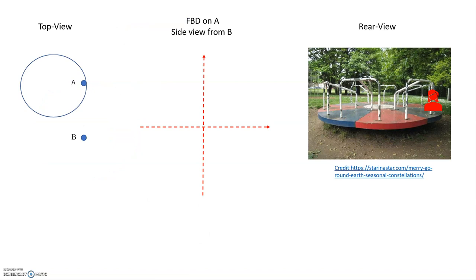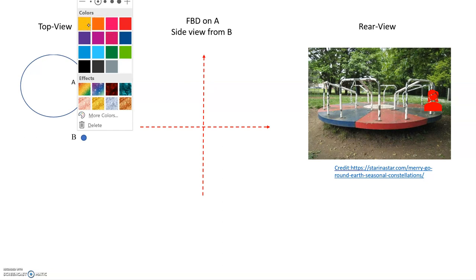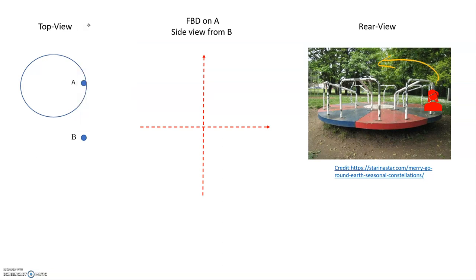Now let's look at the second free body diagram example. You may have been confused about how to draw those Y-direction forces in the last example. This example highlights how changing the way you look at the problem gives you a better idea of what forces are acting. Instead of looking from above like a drone, we're now on the ground at the same height as the girl going around the merry-go-round.